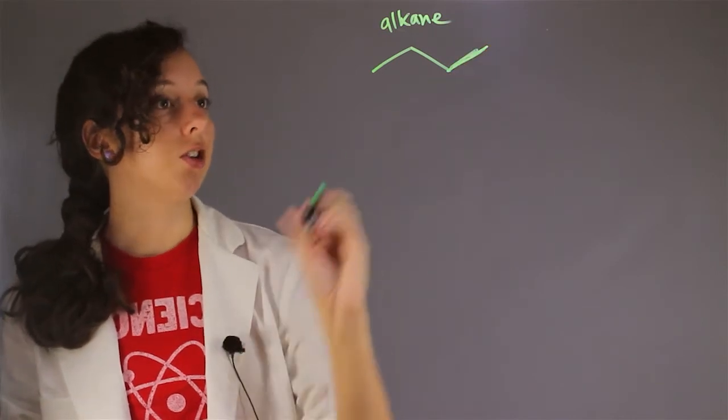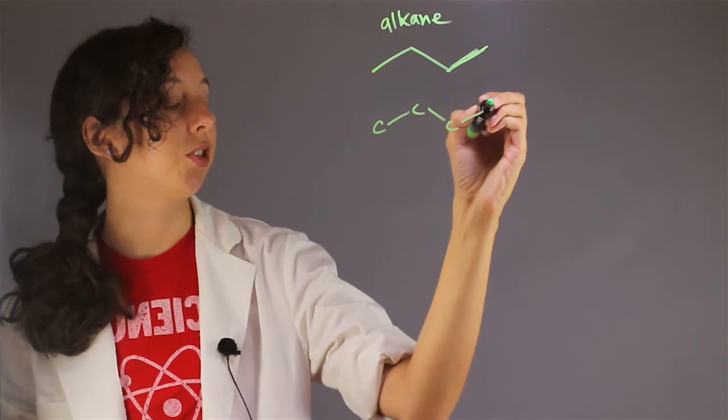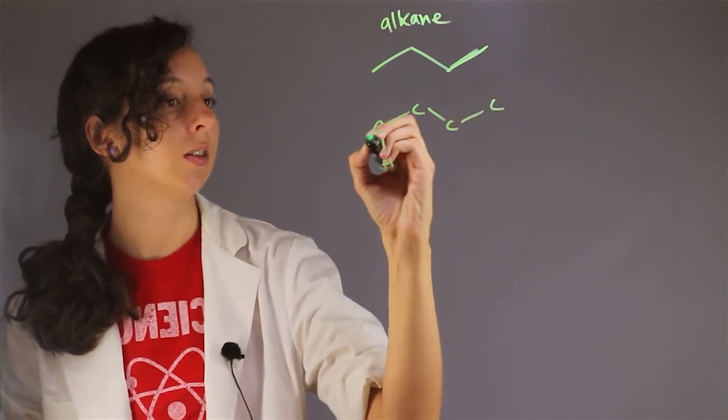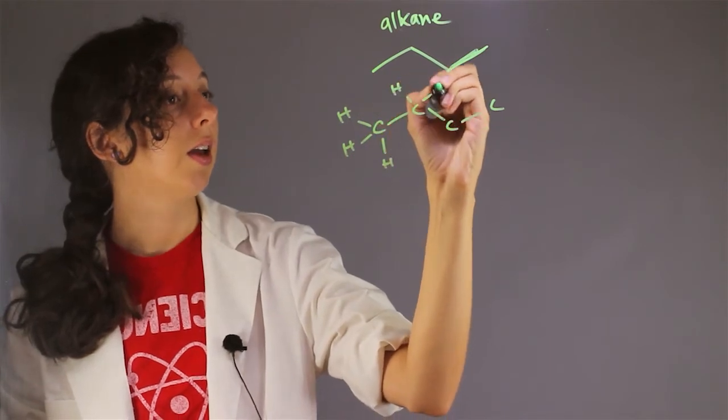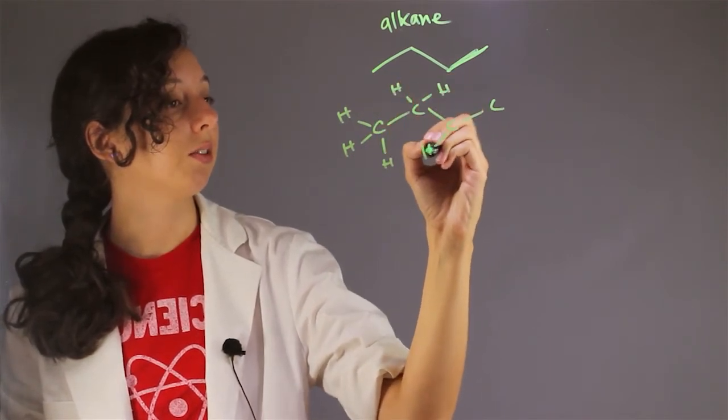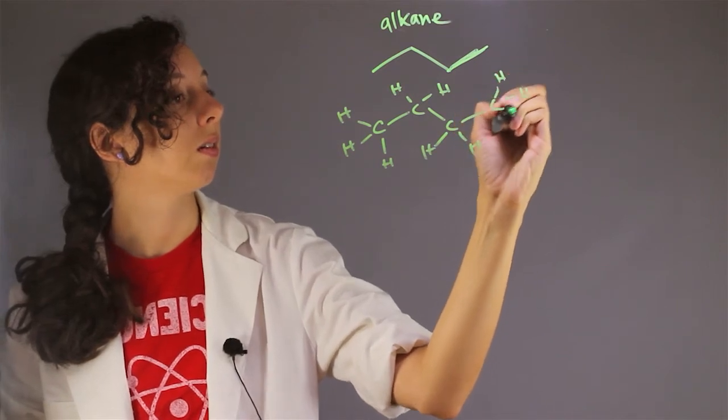Now, if we draw it out fully with all the carbons and hydrogens showing, we can get the chemical formula. And so remember, these are the same things, just drawn a little differently.